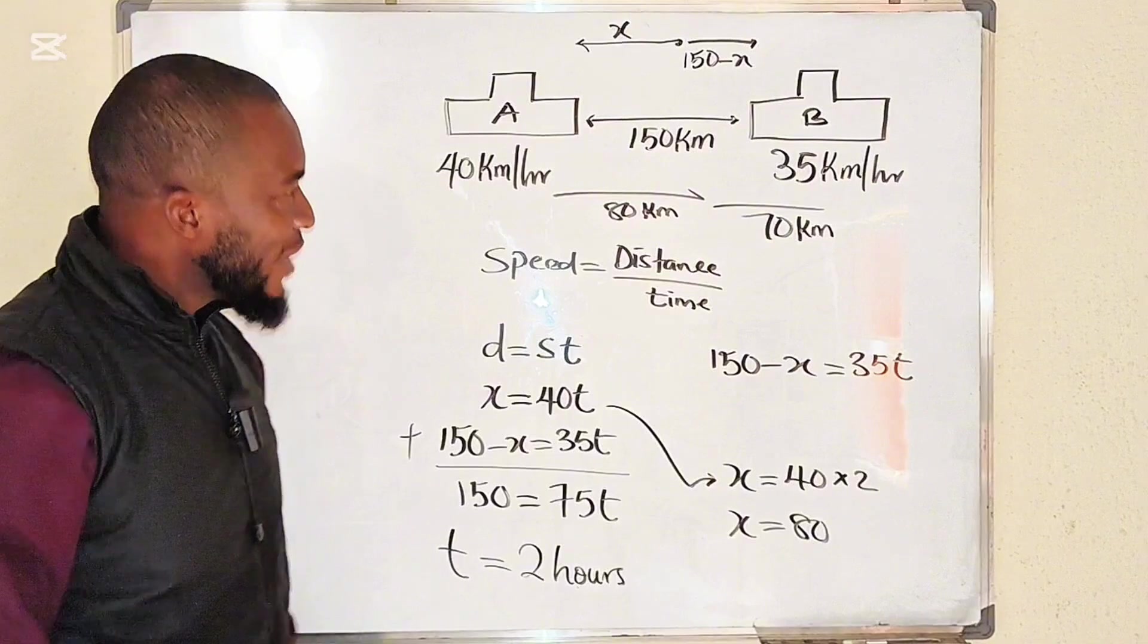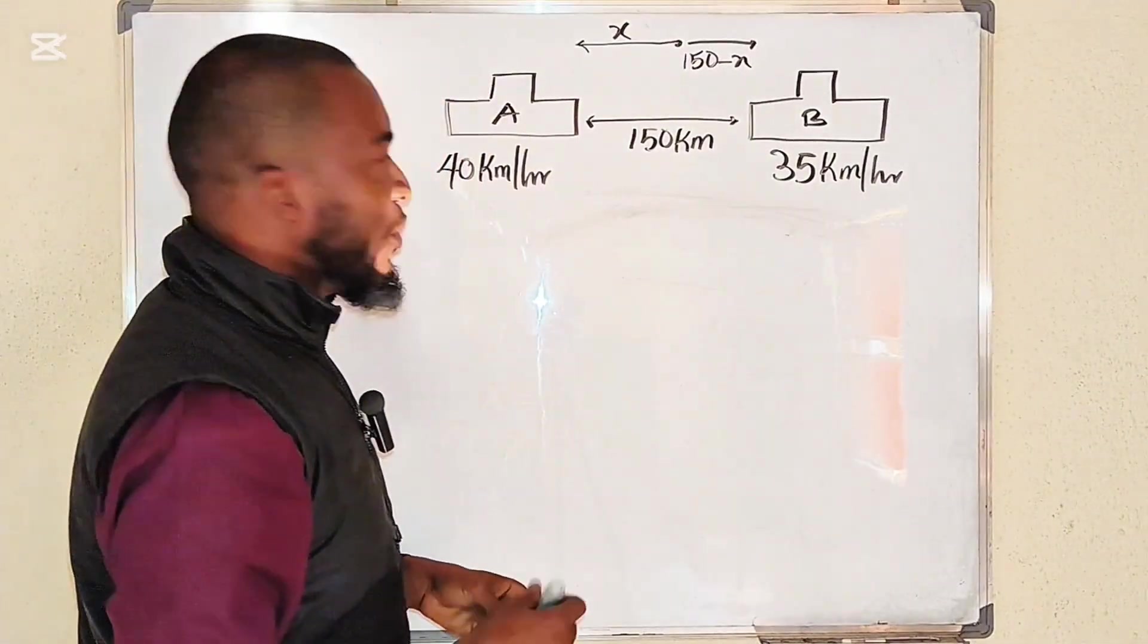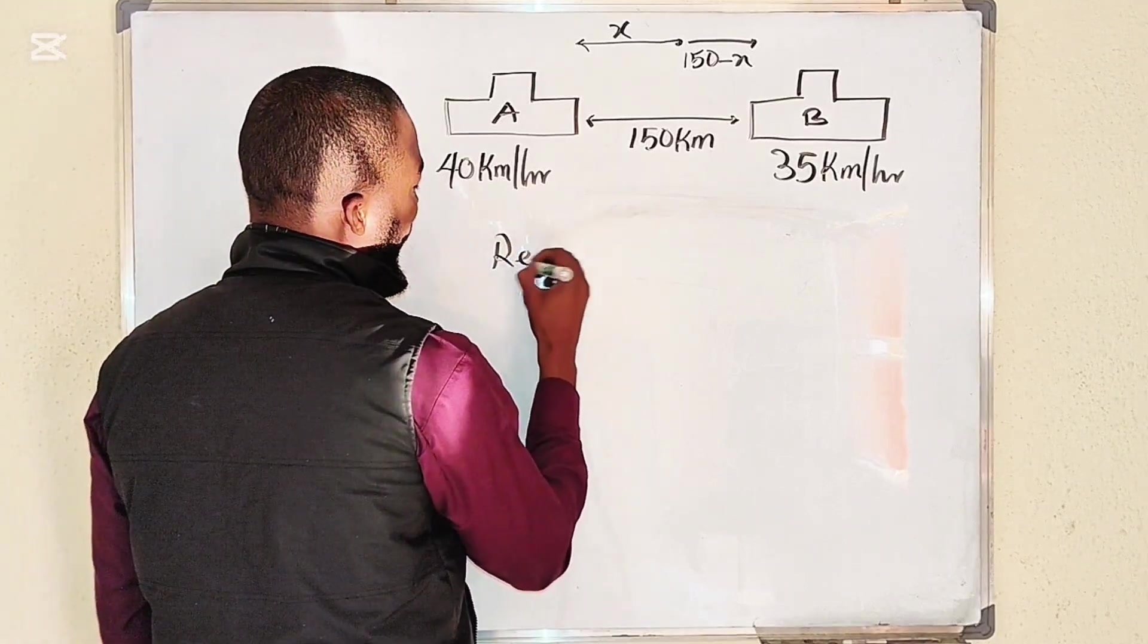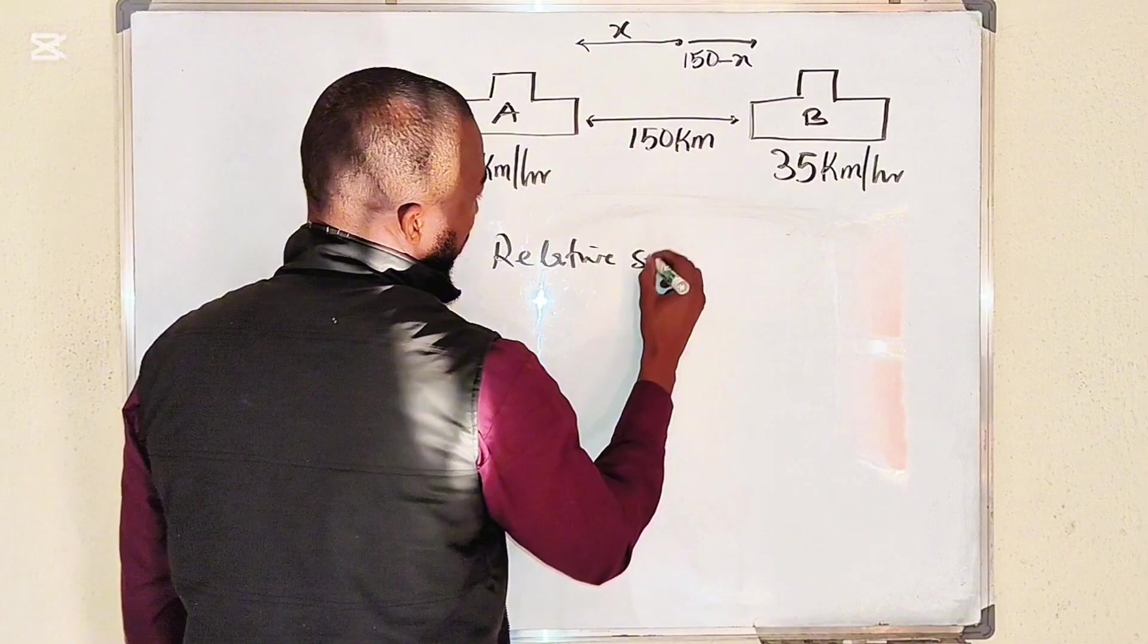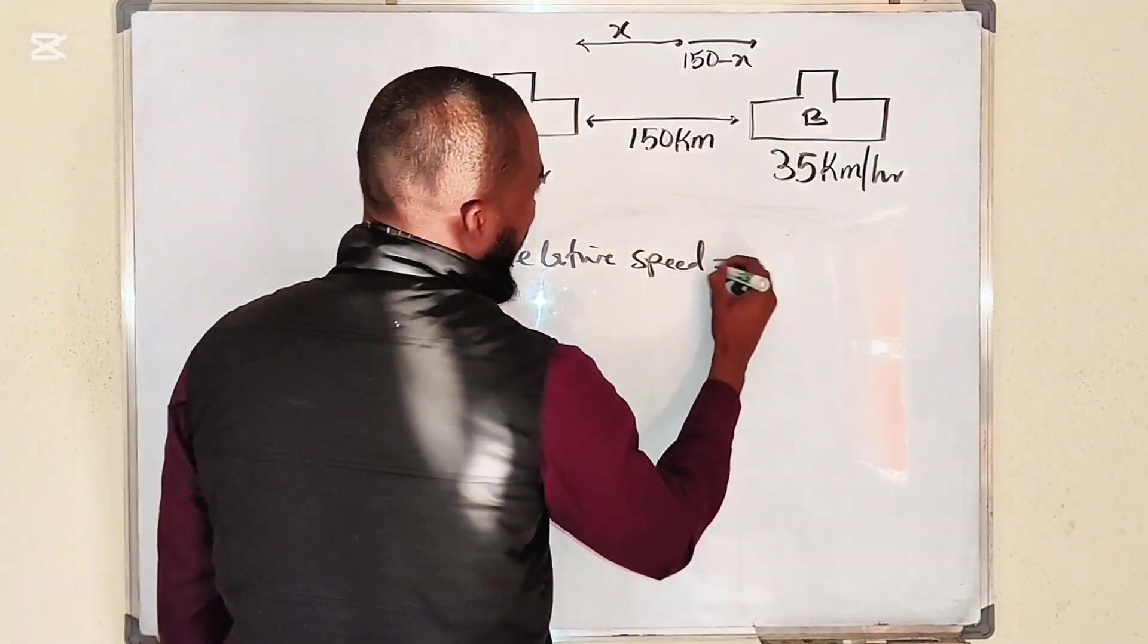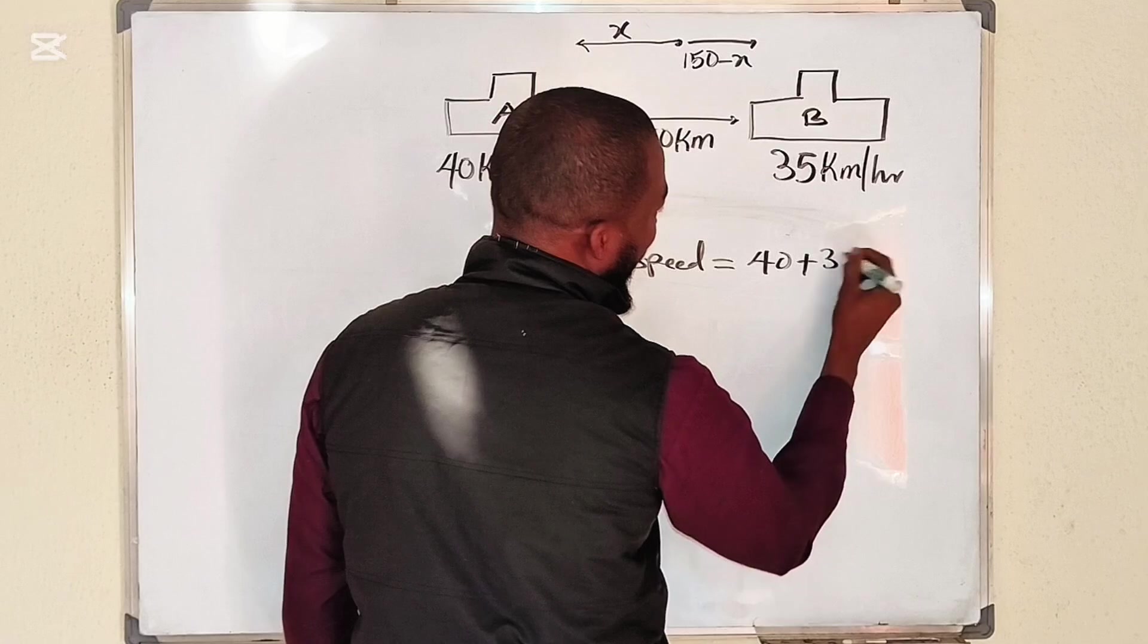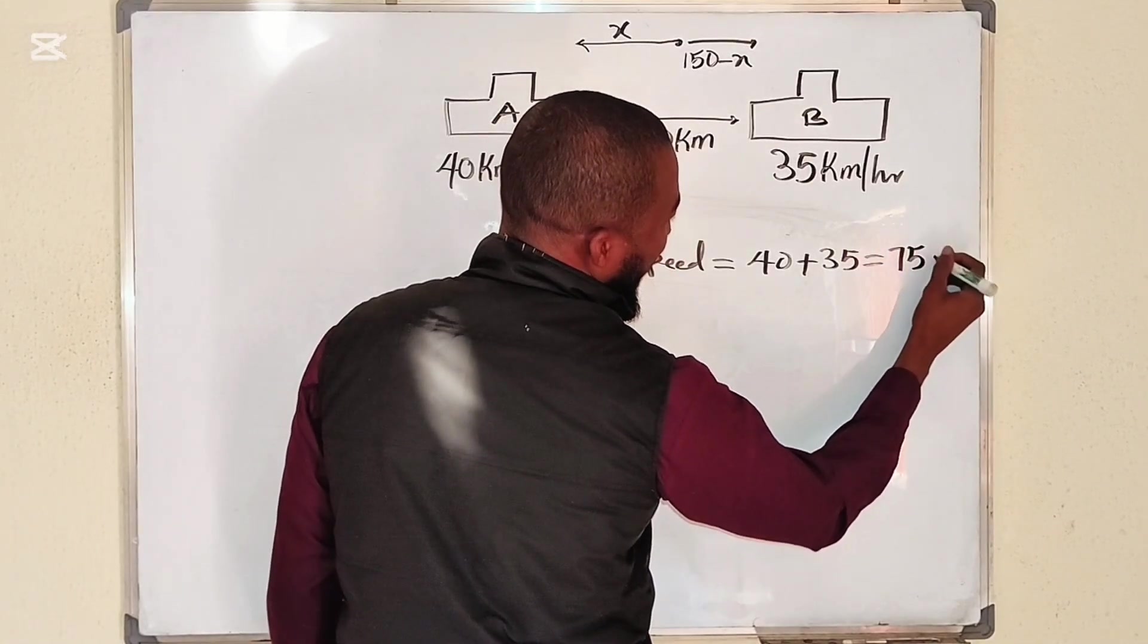Let me show you a shortcut way to do that. First of all, we need to find the relative speed of A and B, which would be the sum of the two speeds: 40 and 35, which is going to give us 75 km per hour.